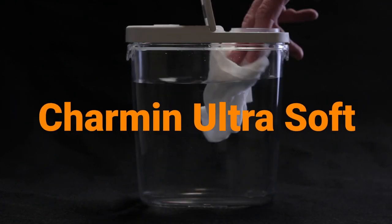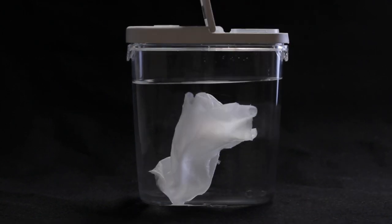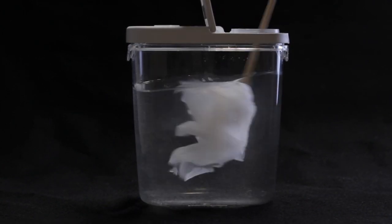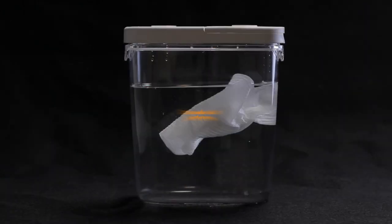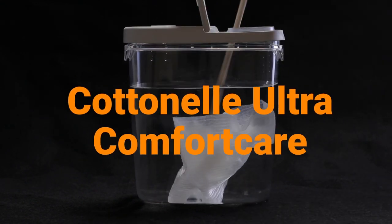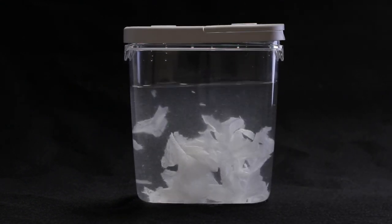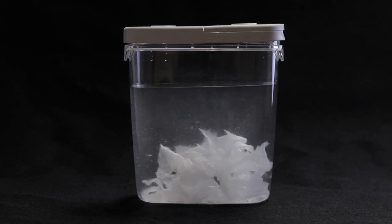Charmin Ultra Soft was the same story as Charmin Strong. It didn't even feel softer to me. Cottonelle Ultra Comfort Care was pretty soft, broke apart well, and was slightly above average in terms of cost.